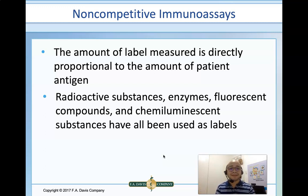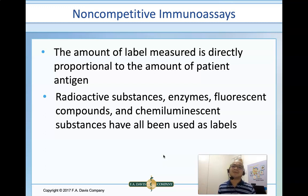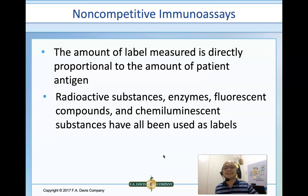For example, if we're using an enzyme label, the higher the absorbance, the higher the concentration of the patient's antigen. We can utilize several labels such as radioactive substances, enzymes, fluorescent compounds, and even chemiluminescent substances. All of these may be utilized as labels.